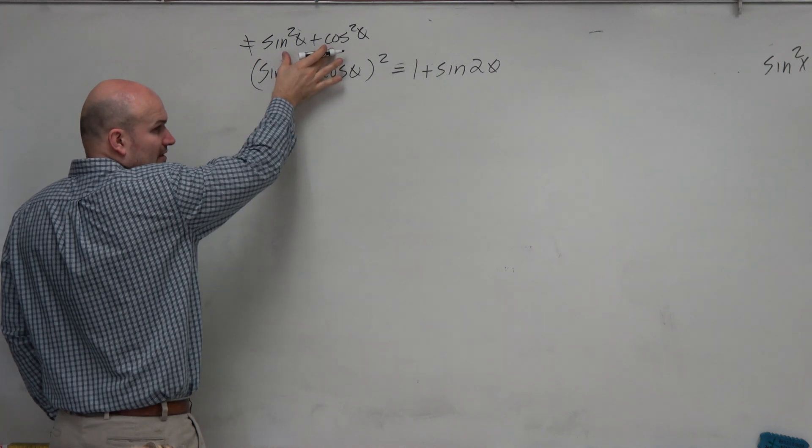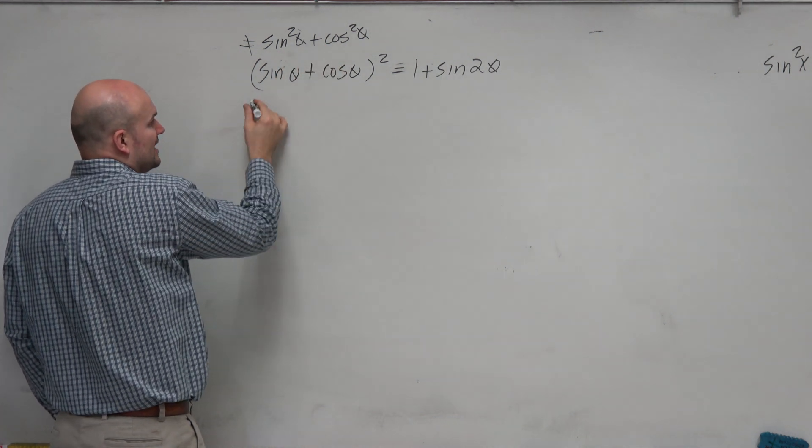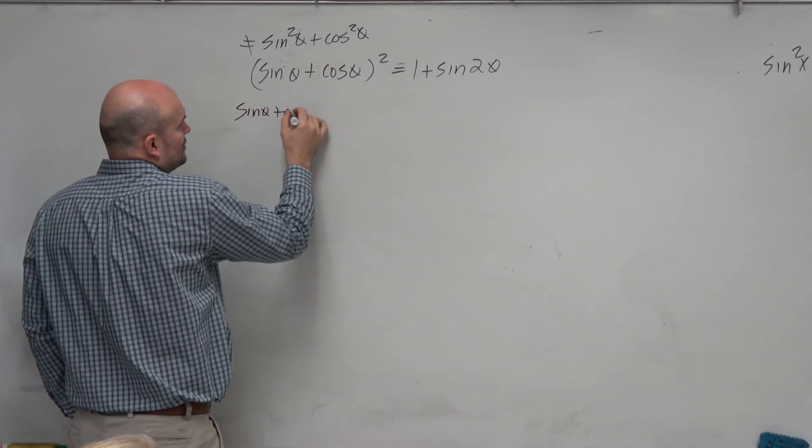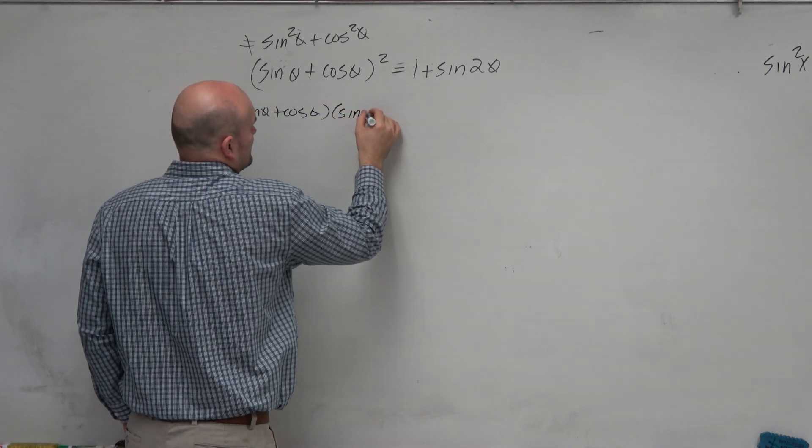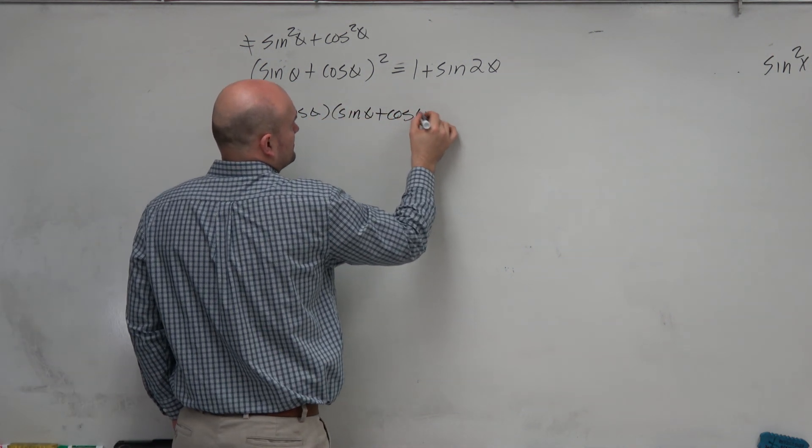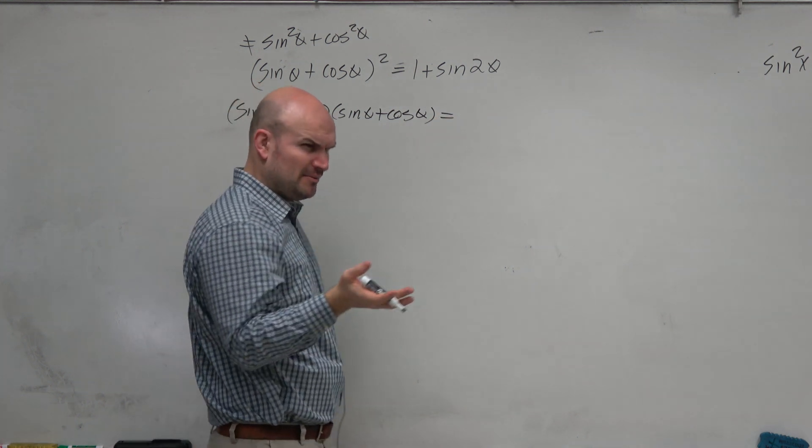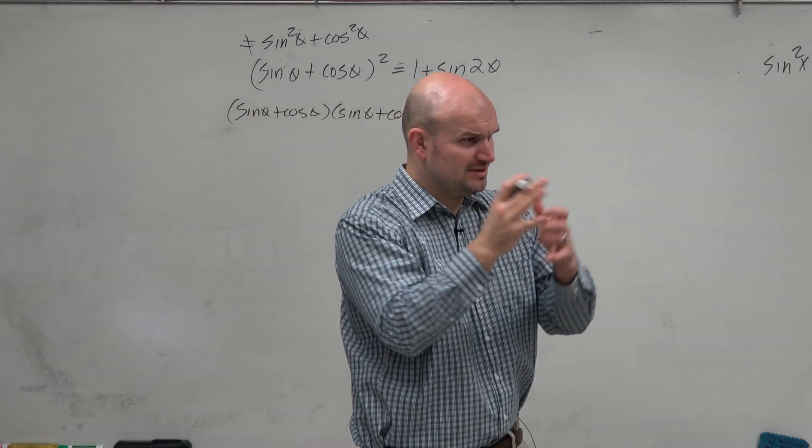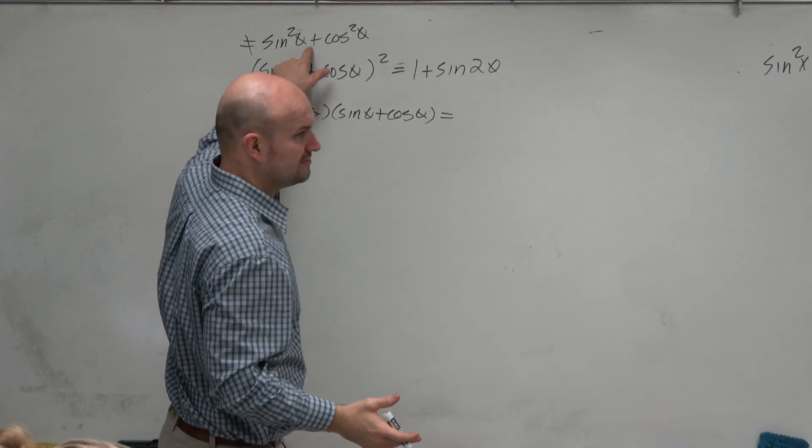This squared does not equal that. This squared means sine of theta plus cosine of theta times sine of theta plus cosine of theta. It's a binomial squared. Remember we did binomial expansion, right? Remember Pascal's triangle, it doesn't equal that.